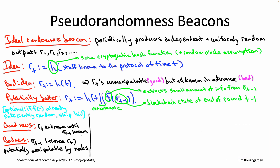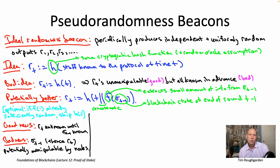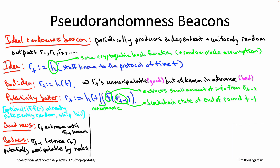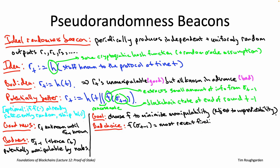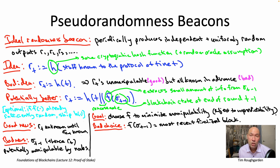You could imagine intermediate points: having f depend on the block that was ten blocks back rather than the most recent block. Then the block proposer at t-1 is not in a position to manipulate R_t — but it does have that exact same incentive to grind through different blocks to get a good pseudo-random seed for ten time steps from now, potentially guaranteeing it is elected leader again ten time steps in the future. So that problem hasn't really gone away.